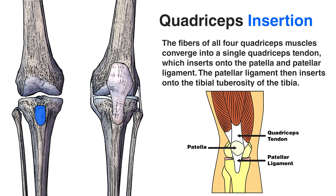Looking at the insertion of the quadriceps muscle group: all four quadriceps muscles merge together to form the quadriceps tendon. The quadriceps tendon inserts onto the patella and the patellar ligament. The patellar ligament then continues down the leg, crosses the knee joint, and connects onto the tibial tuberosity — a bony protrusion on the front of the tibia, marked in blue here for clarity.